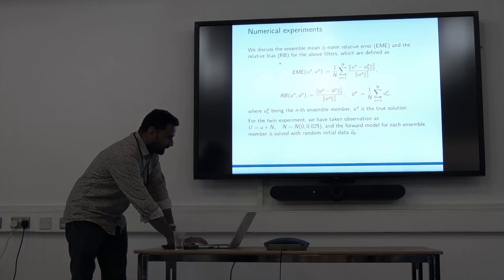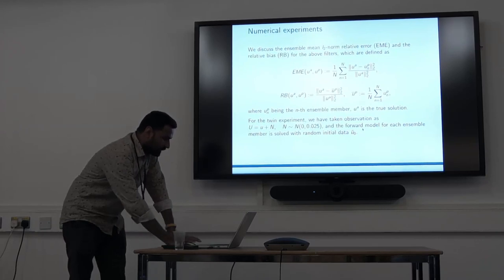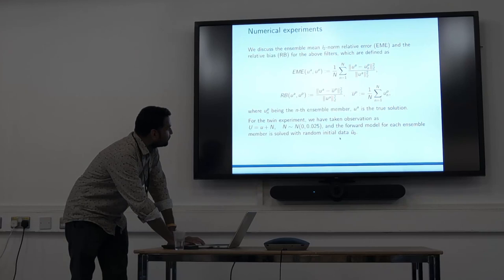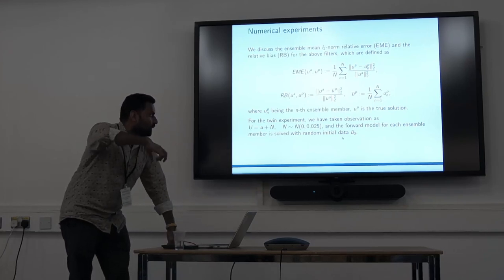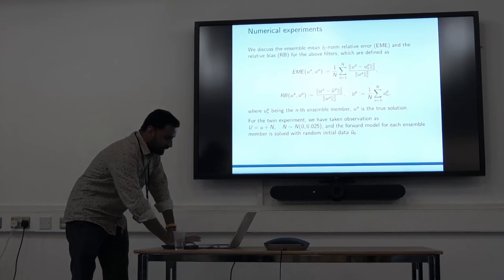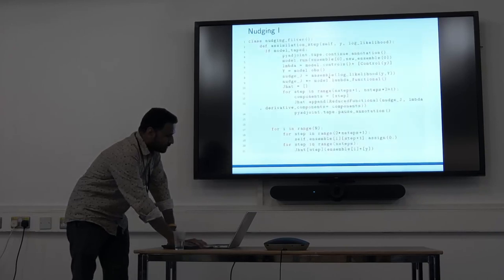These are the numerical experiments. I'll go through the RMSE error and relative biases with these formulas. For the twin experiment we've taken observations as u plus a normal random variable with zero mean and this variance. For solving the forward model for ensemble members, we're taking initially random initial data, so every particle uses this u_0.